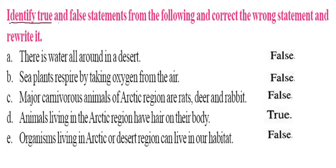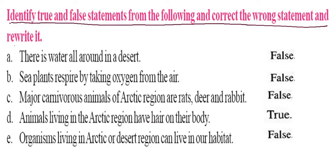Now, identify true and false statements from the following and correct the wrong statements. The first statement is: there is water all around in a desert.